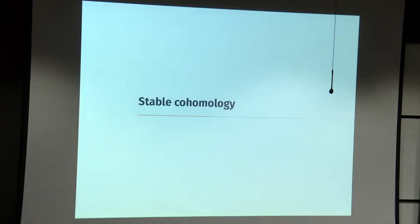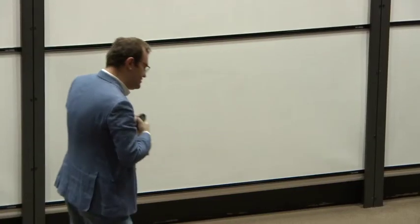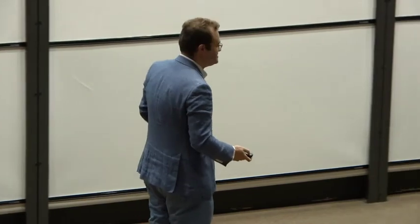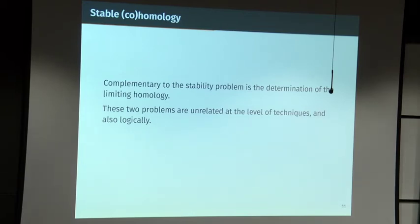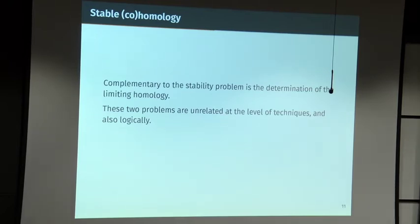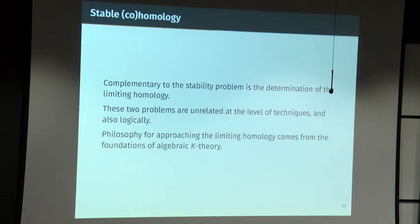That's one part of the story: showing that a whole family of moduli spaces have the same homology in a stable range. Once you know the homology stabilizes you're tempted to ask what it is — but these are completely different problems with completely different methods. There are many examples of things we know stabilize but have no idea what the limit is. The technique used to compute stable homology has a very different source: it comes from the foundations of algebraic K-theory as defined by Quillen.